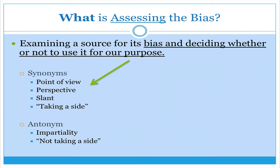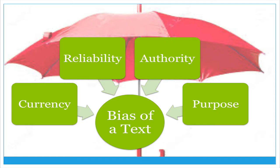Can it help us advance our argument, or is it too biased or too slanted to help us with our purpose? We're going to break down the idea of bias into four compartments. We're going to examine texts on their currency, their reliability, their authority, and their own purpose. When we look at each of these individually and all together, that serves as the umbrella of different ways we can assess a text's bias.